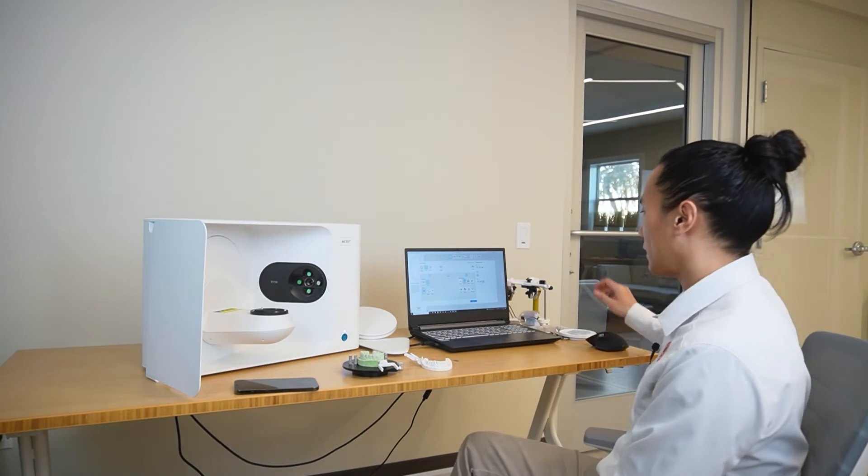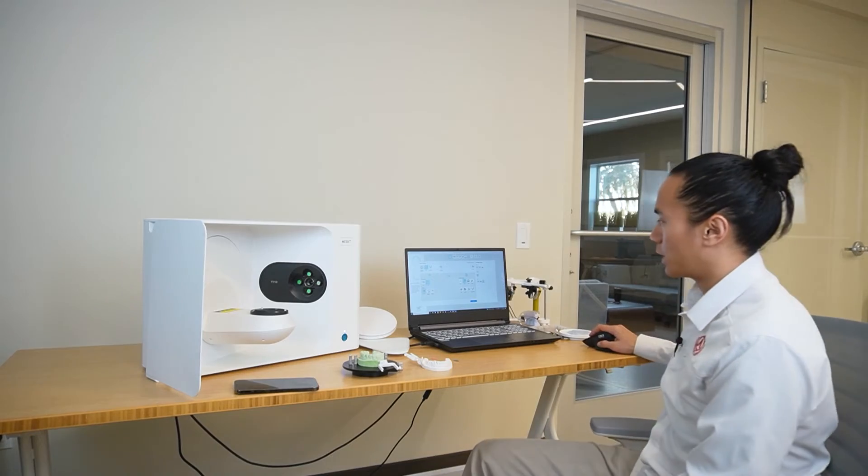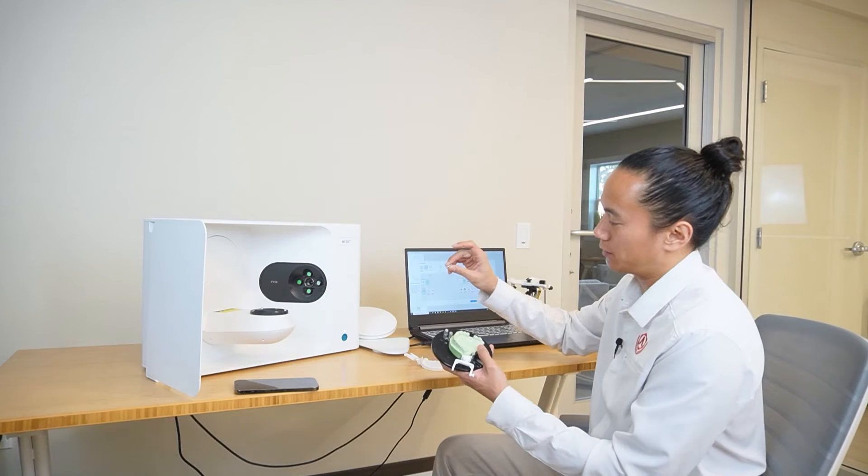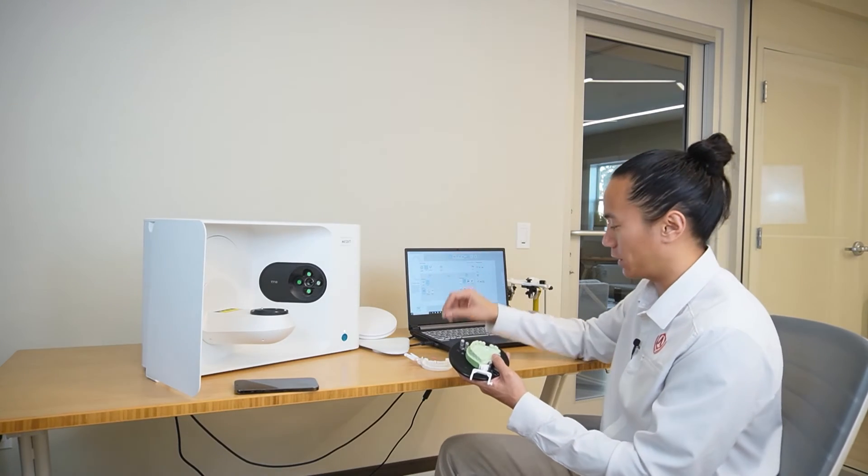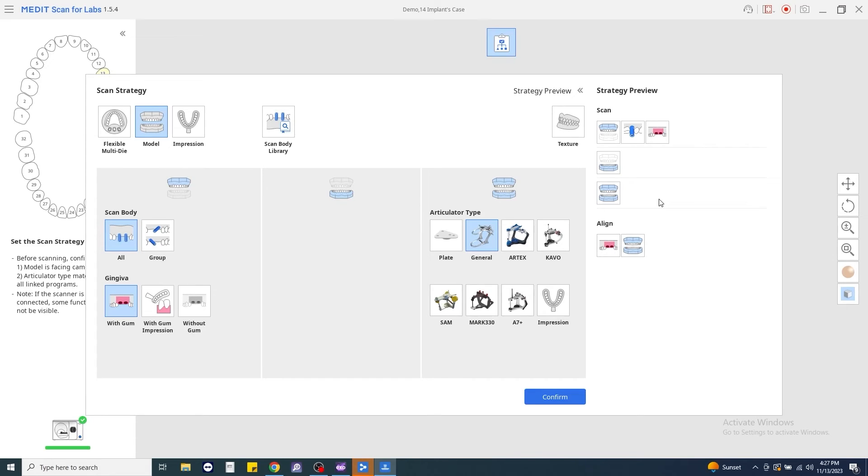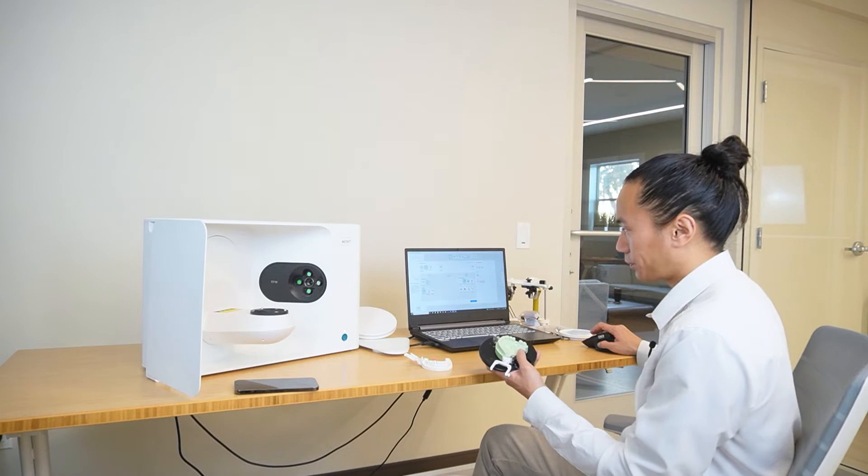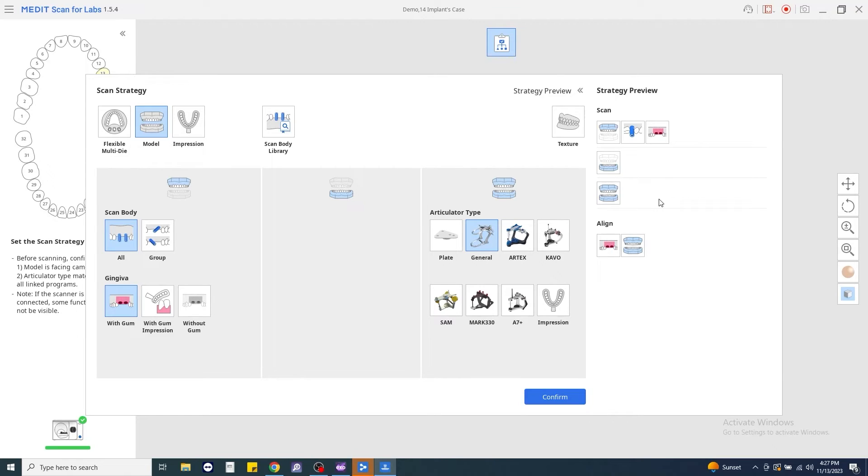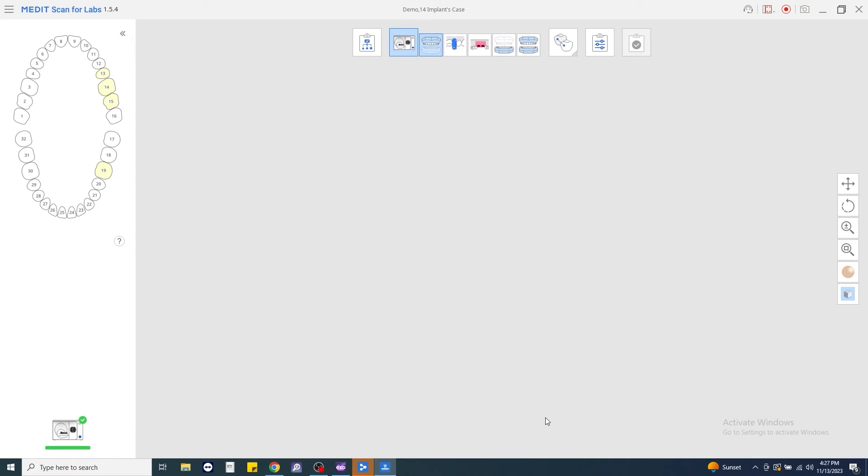Once the ExoCAD setup has been completed, we're going to confirm our scan strategy. So from here, what we're going to make sure of is that if we have the ability to scan our gingiva and our scan body separately, we're going to choose the group for scan body option. For gingiva, we're going to say with gum. For the opposing, we'll leave it at default and articulator type as general. We'll go ahead and confirm that.